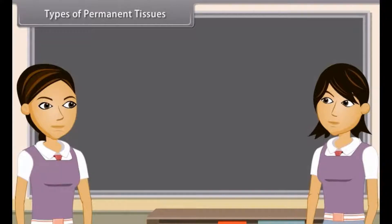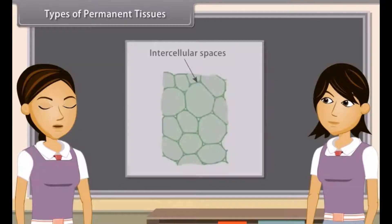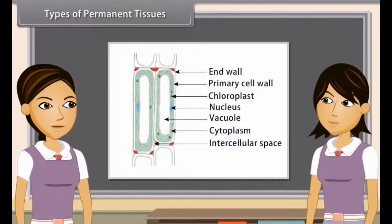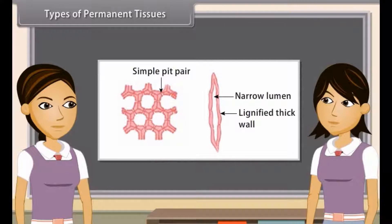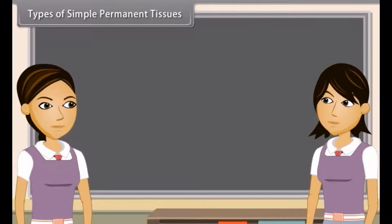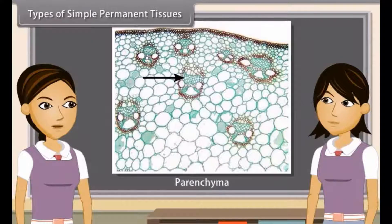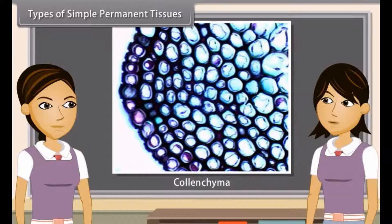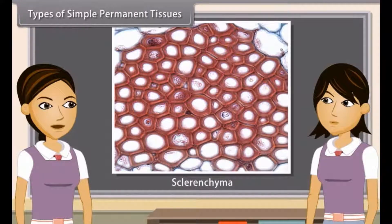Permanent tissues are of two types on the basis of nature of cell: simple and complex. Simple permanent tissues are composed of cells which are functionally and structurally similar. On the basis of nature of cells, simple permanent tissues are of three types: parenchyma, collenchyma and sclerenchyma. Parenchyma is made up of cells with thin primary walls that retain their protoplasm. Collenchyma is made up of cells with thick primary walls that retain their protoplasm. Sclerenchyma is made up of cells with lignified secondary walls that have lost their protoplasm at maturity — that is, they are dead.